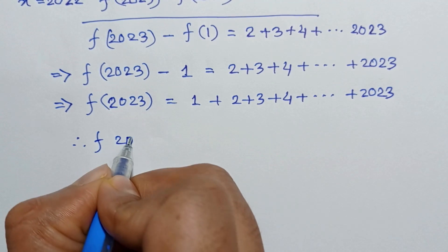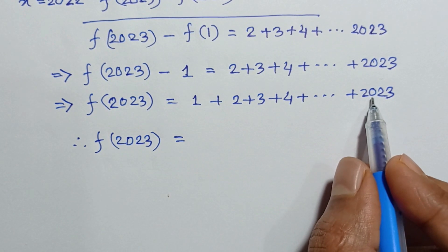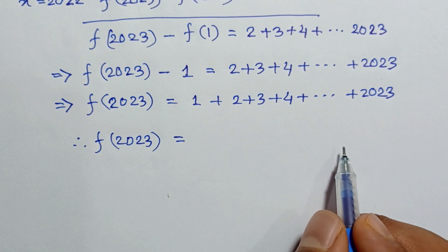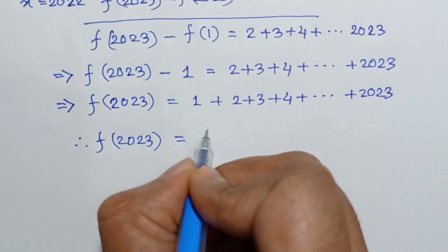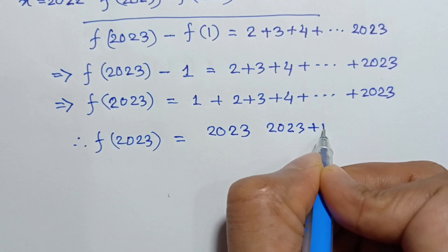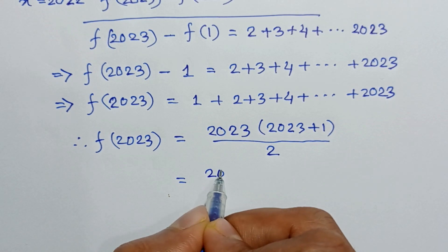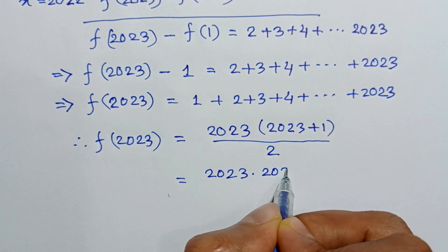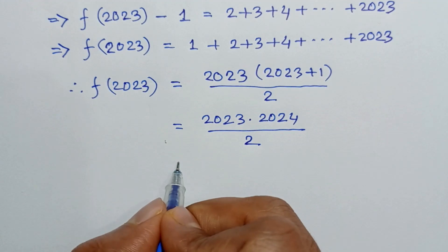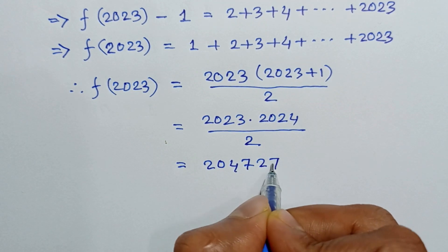Since f(1)=1, f(2023) = 1 + 2 + 3 + 4 + … + 2023, which is the sum of the first 2023 natural numbers. Using the formula n(n+1)/2, we get 2023 × 2024 / 2 = 2,047,276. So the value of f(2023) is 2,047,276.